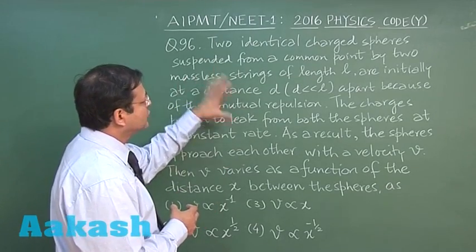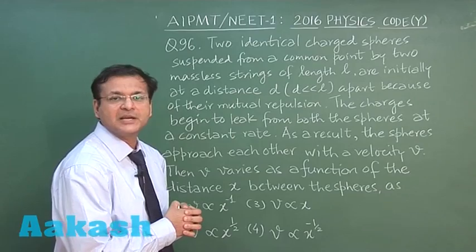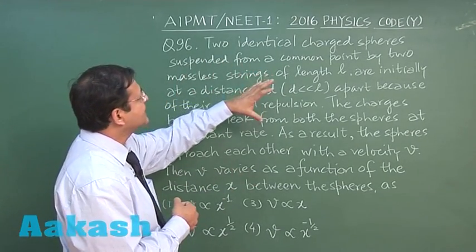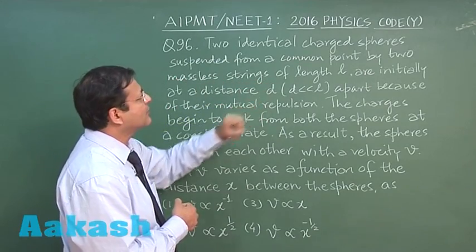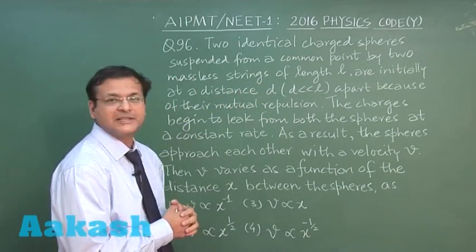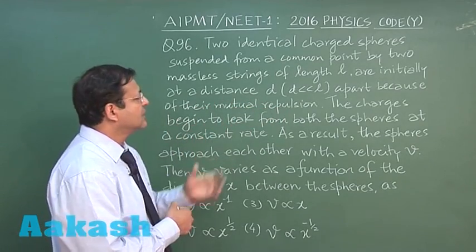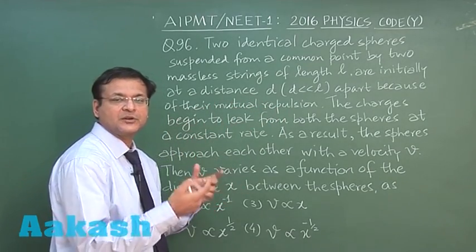You can solve this question with the help of some dimensional analysis. Two identical charged spheres suspended from a common point by two massless strings of length l are initially at a distance d apart because of their mutual repulsion. It's a kind of two simple pendulum suspended.